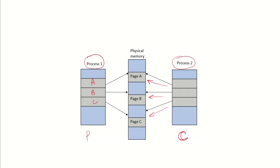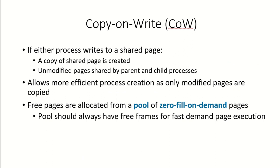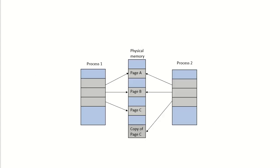All pages of the parent process — page A, page B, and page C — can be accessed by the child process. Now if either the parent or the child wants to write to a shared page, a copy of only that shared page will be created. The process that wants to write will then write on this newly created copy.